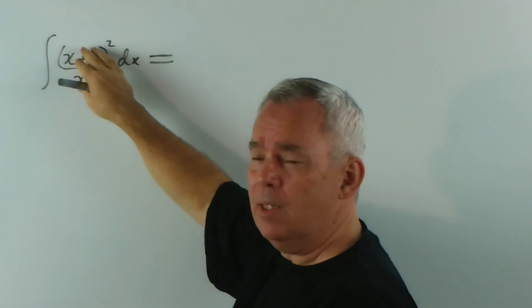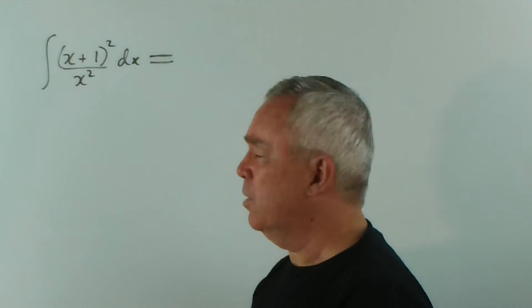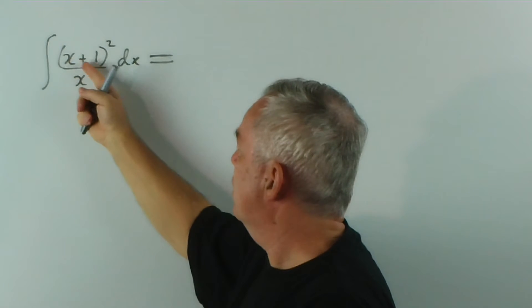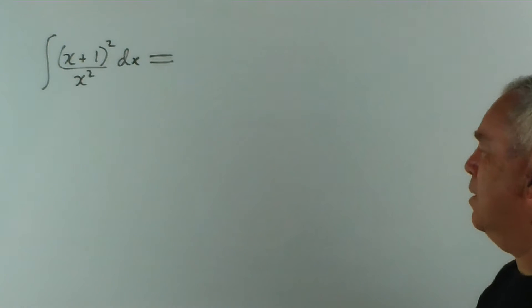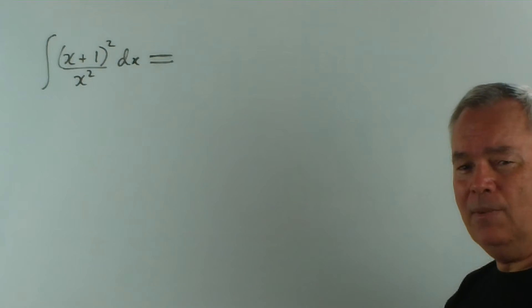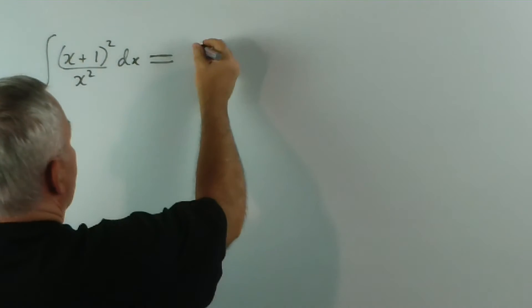Otherwise, we'd have a 2x up there. And we don't have a normal power model where the derivative of the function inside is out the front. This is where we do consider expanding. And I'll show you what we get.